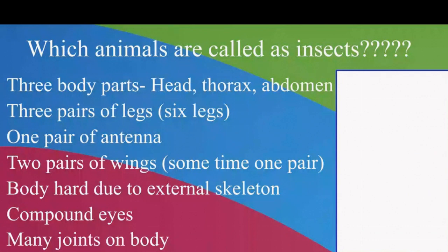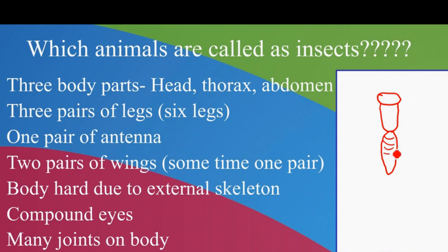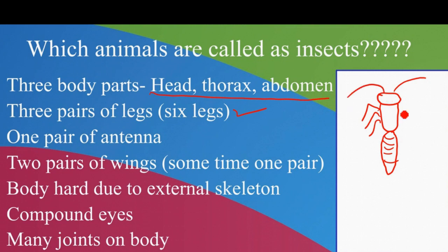Now, which animal is called an insect? The main thing: insects have three body parts. This is the head, this is the thorax, and this is the abdomen. The abdomen has segments. Then three pairs of legs — one, two, and three, same on the other side. One pair of antennae. Two pairs of wings — this is one, this is the second.